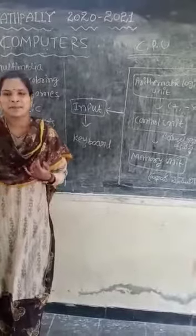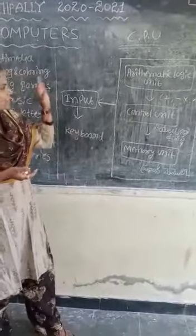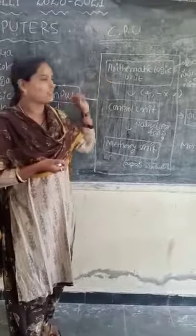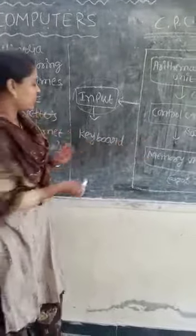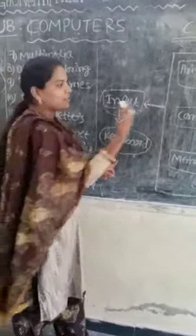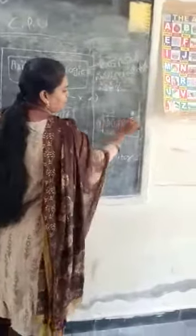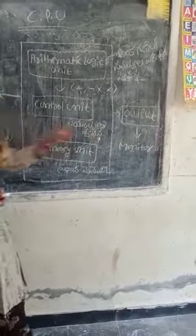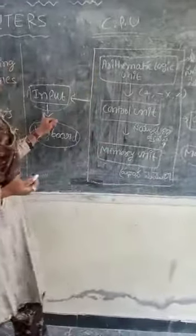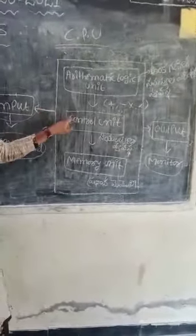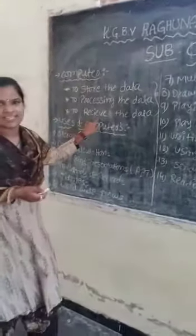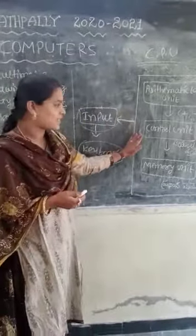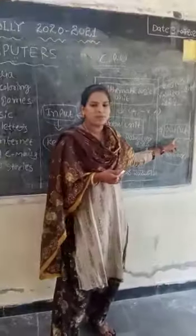For example, we store topics and data under the memory unit. The input device is where we give information to the CPU. Input means we send data into the CPU. The output is the result data — for example, the monitor or screen shows the output. So the process is: we give input data, the CPU processes it, and the output is the result. Store the data, process the data, and receive the result — that is how the computer works.